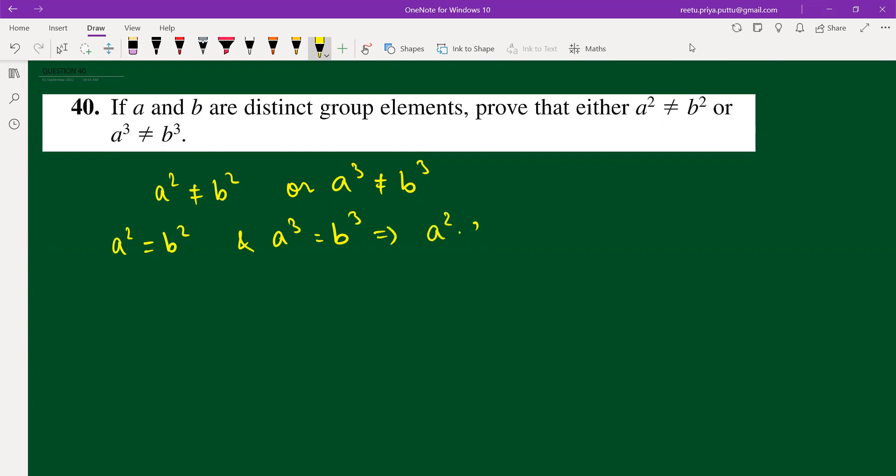Then you can say that this implies a² times a equals b² times b. Now we know that a² equals b² so just put b² here. We get b² times a equals b² times b, and you can cancel b² because we are in a group. So we get a equals b.